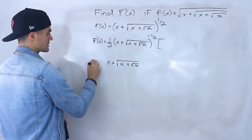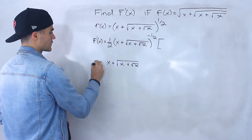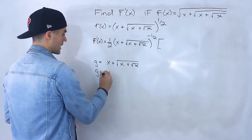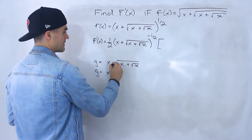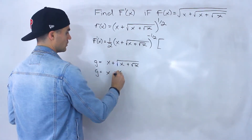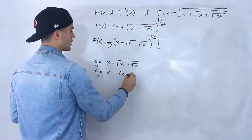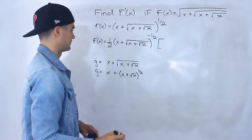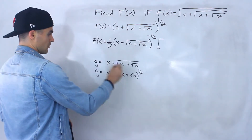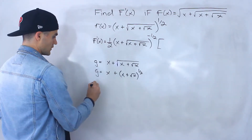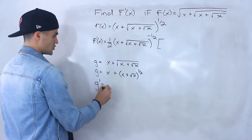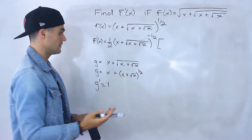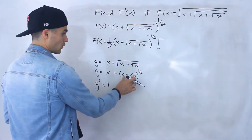Before finding the derivative of this, let's call it function g. I'm going to rewrite this function now as x plus — and then this square root I'm going to change to a power of one half. So we've got to find the derivative of this. The derivative of g: what's the derivative of x? It's just one.